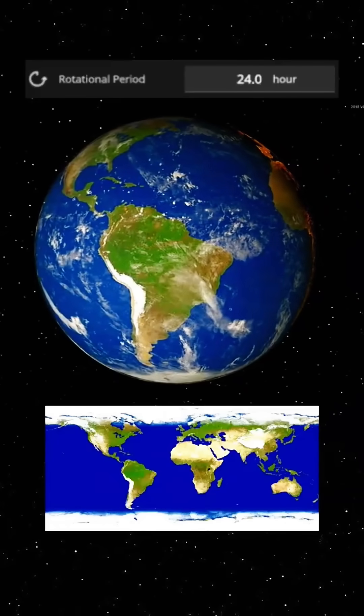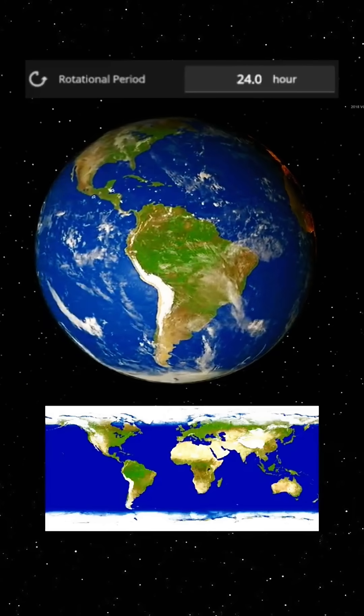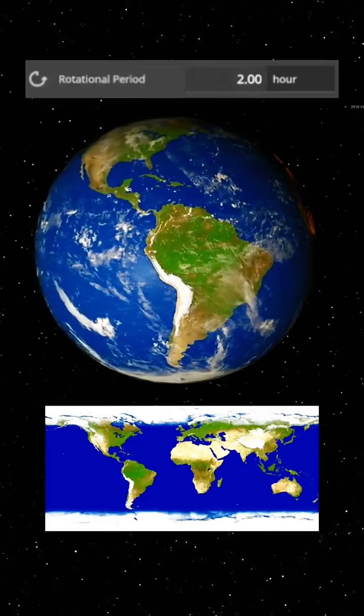What if Earth's rotation speed was 2 hours instead of 24? First, let's speed up Earth's rotation so that a full day lasts just 2 hours instead of 24.